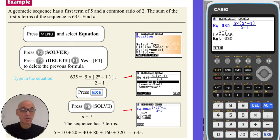So the sequence has 7 terms. And again, as it's a small number of terms, we could list them out to verify our answer, as shown.